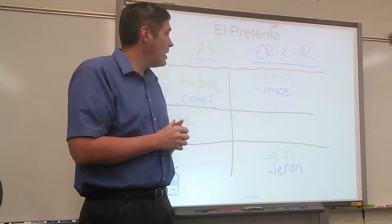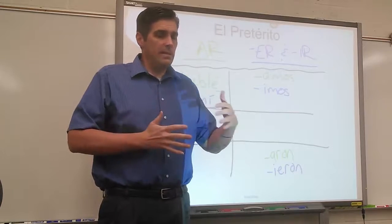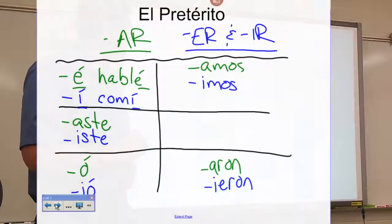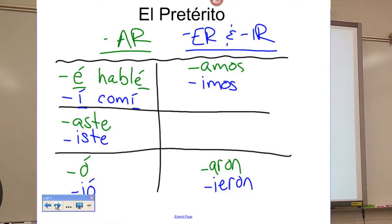We found in class that we'd slipped away from the preterite for a bit, so we did a quick refresher. Up here on the screen I've got the endings for the preterite. Remember, the preterite is for actions that are completed in the past — specific beginning, specific end. AR verb like hablar: hablé, hablaste, habló, hablamos, hablaron. ER and IR verbs: comí, comiste, comió, comimos, comieron.